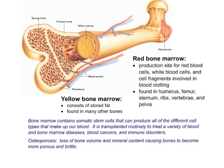One last note on the skeletal system: osteoporosis is the loss of bone volume. Bone becomes less dense, mineral content is lost, and bones become more porous and brittle. It is very common, with older women tending to experience it more, primarily due to the decrease in estrogen production.